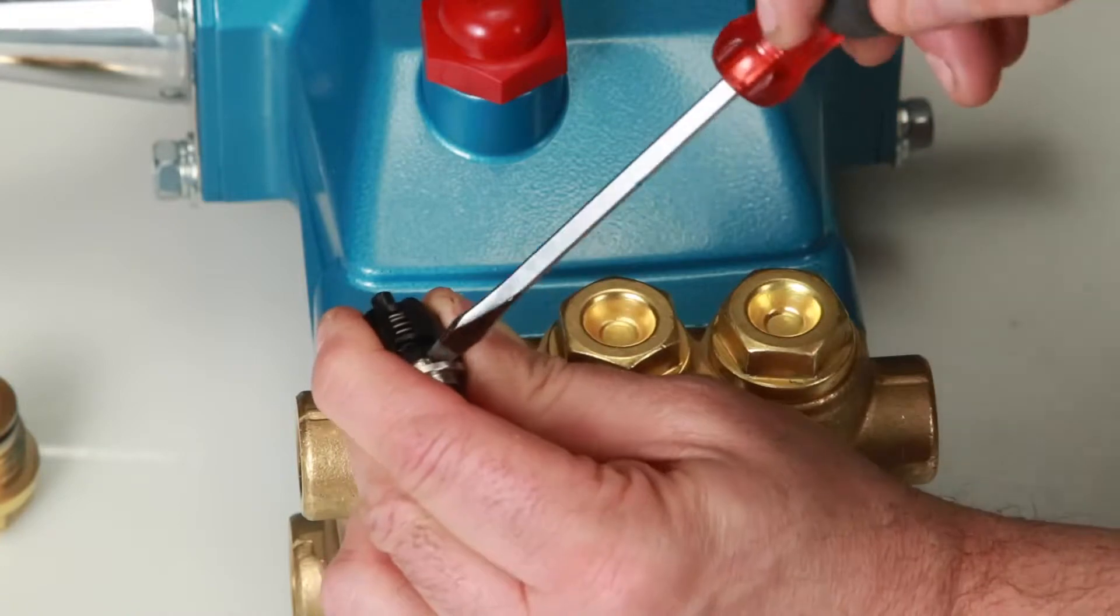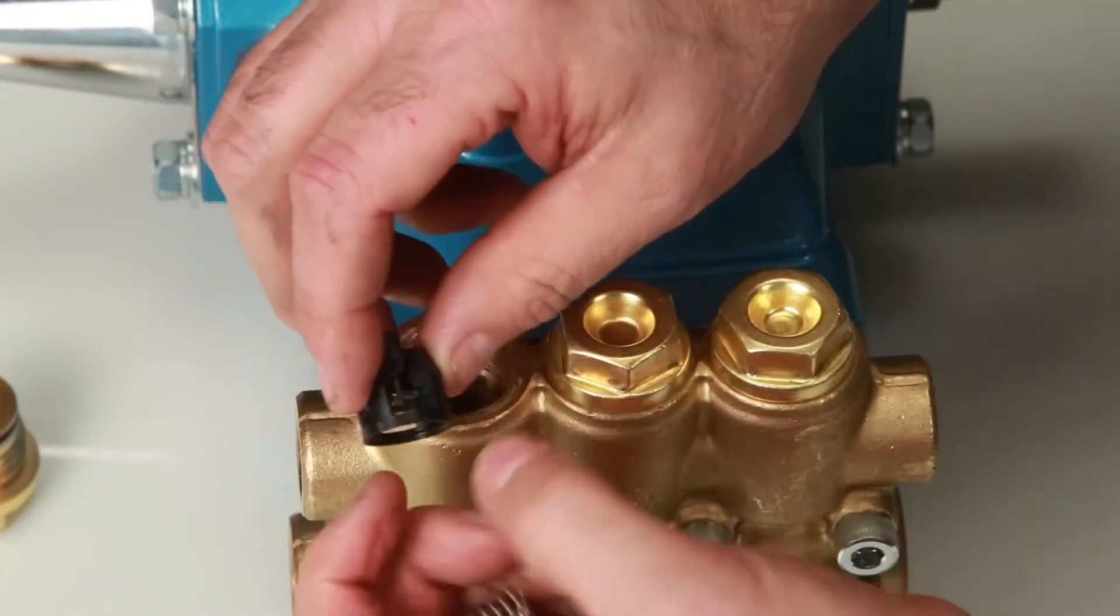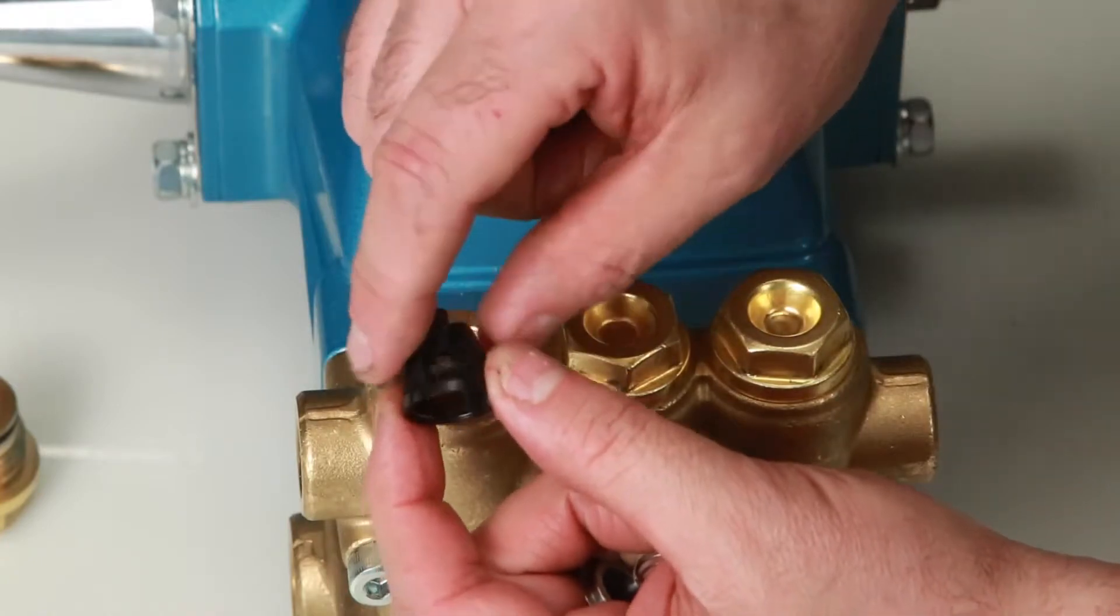Place flat-tip screwdriver in the gap and twist to completely separate. Next, inspect spring retainer for cracks, excessive wear, or damage.